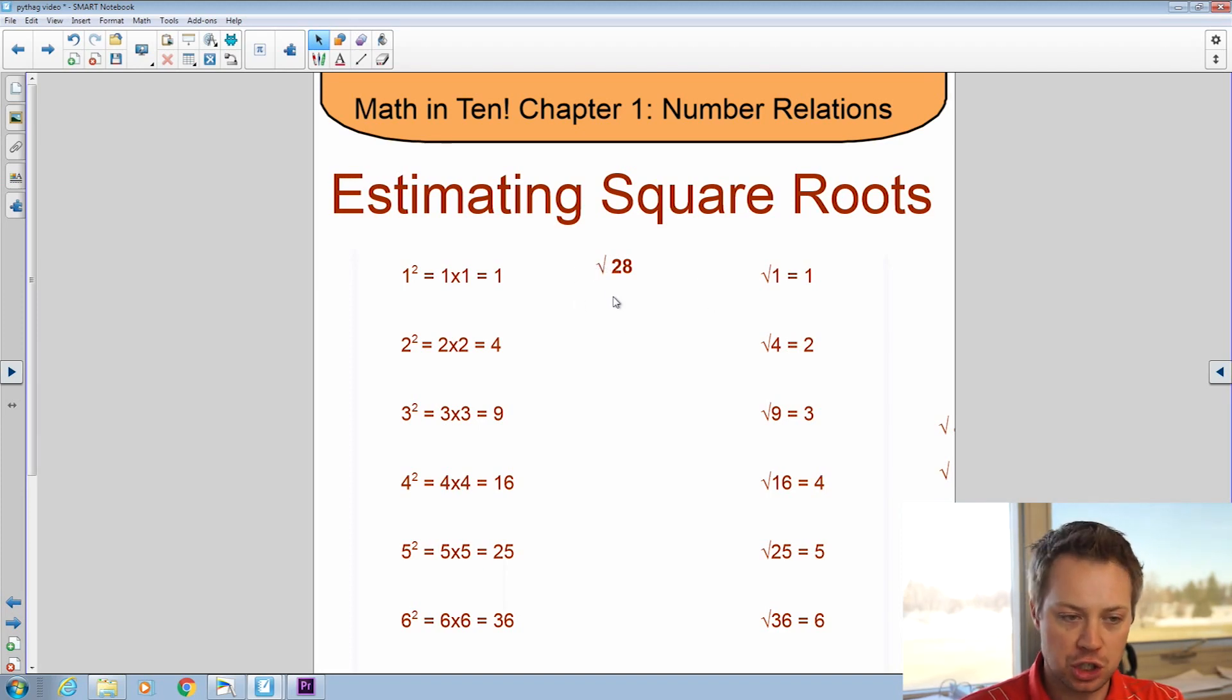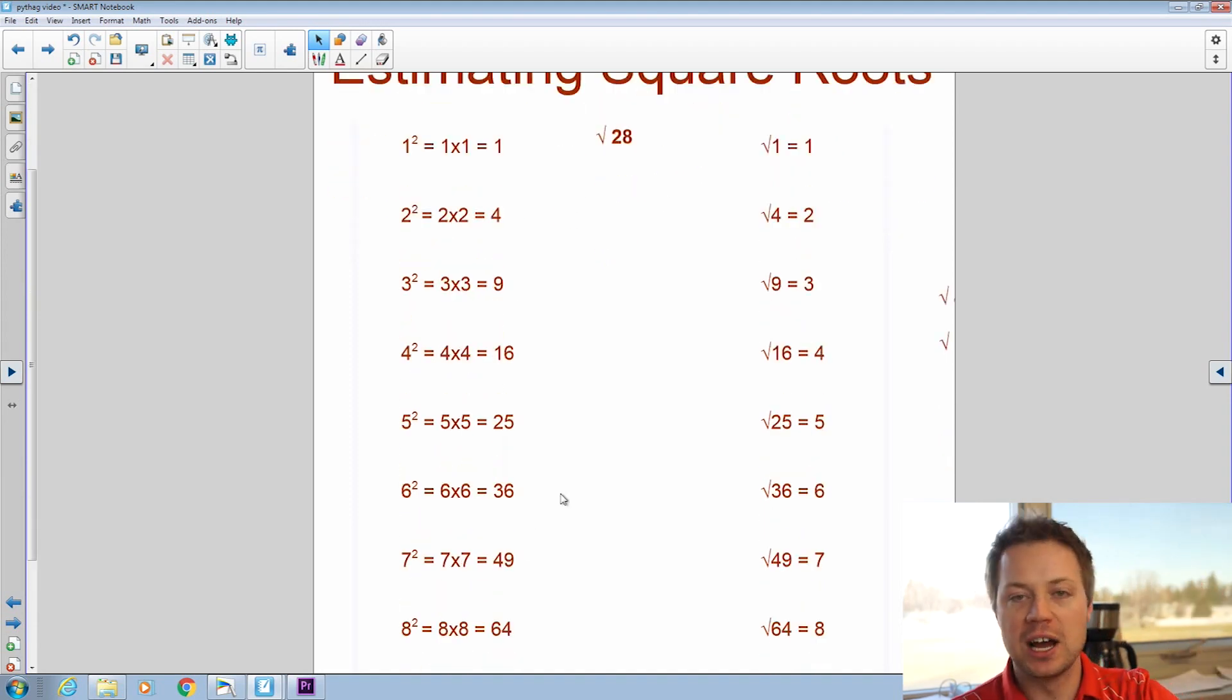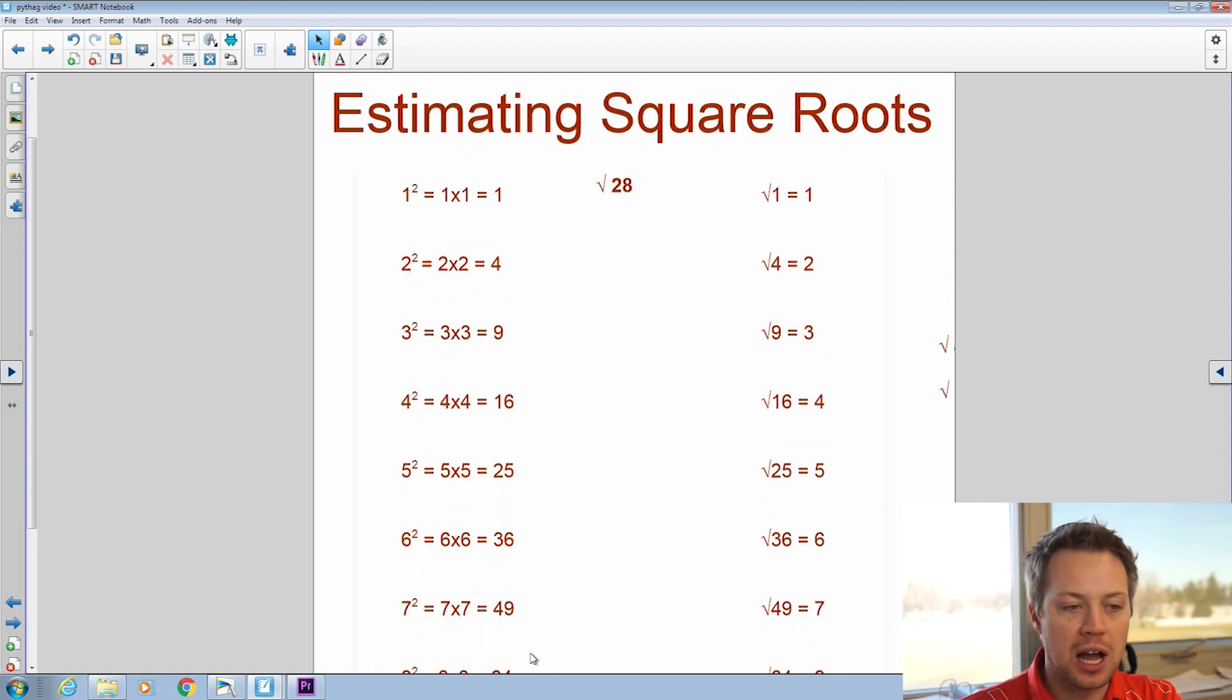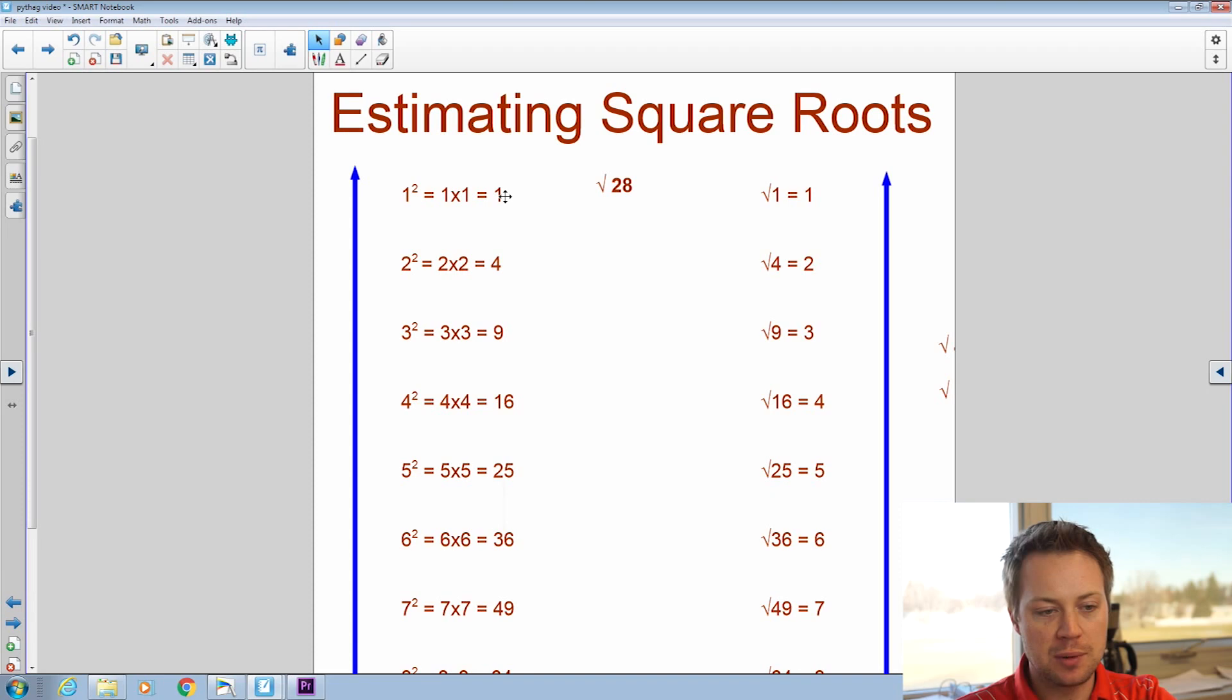And what we're going to do here is use this chart of all the perfect squares. So 1, 4, 9, 16, 25, 36, all the way down to 100, which was 10 by 10. We're going to think of that as a number line. So if we think of this as just a continuous stream of numbers, there's obviously numbers in between all of these perfect squares.